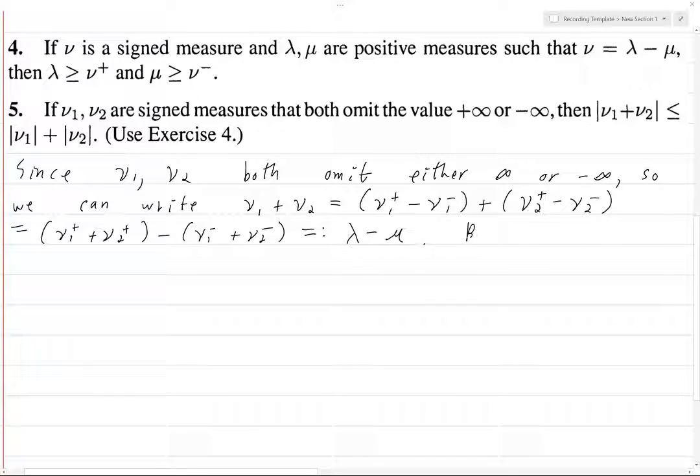Alright, now, by Exercise 4, we have λ is greater than or equal to (ν₁ + ν₂)⁺. So this thing is a signed measure - when you add the two signed measures, you get a new signed measure, and this is just the positive part of this. Okay, and likewise, μ is greater than or equal to (ν₁ + ν₂)⁻.